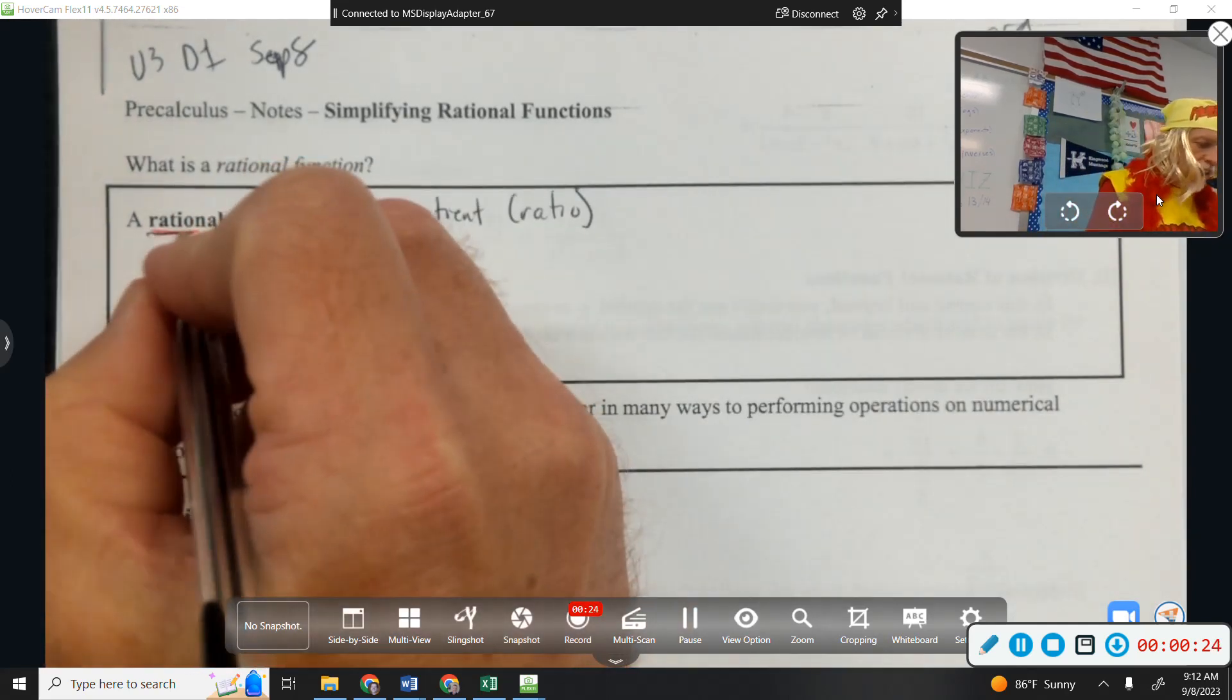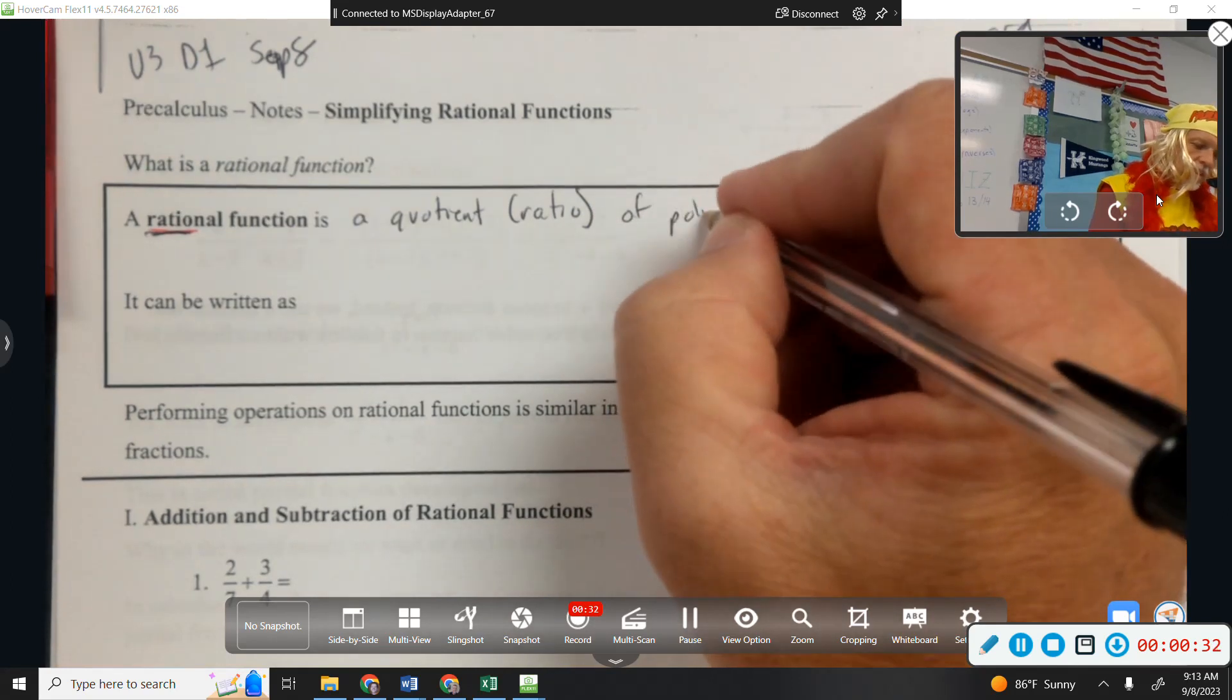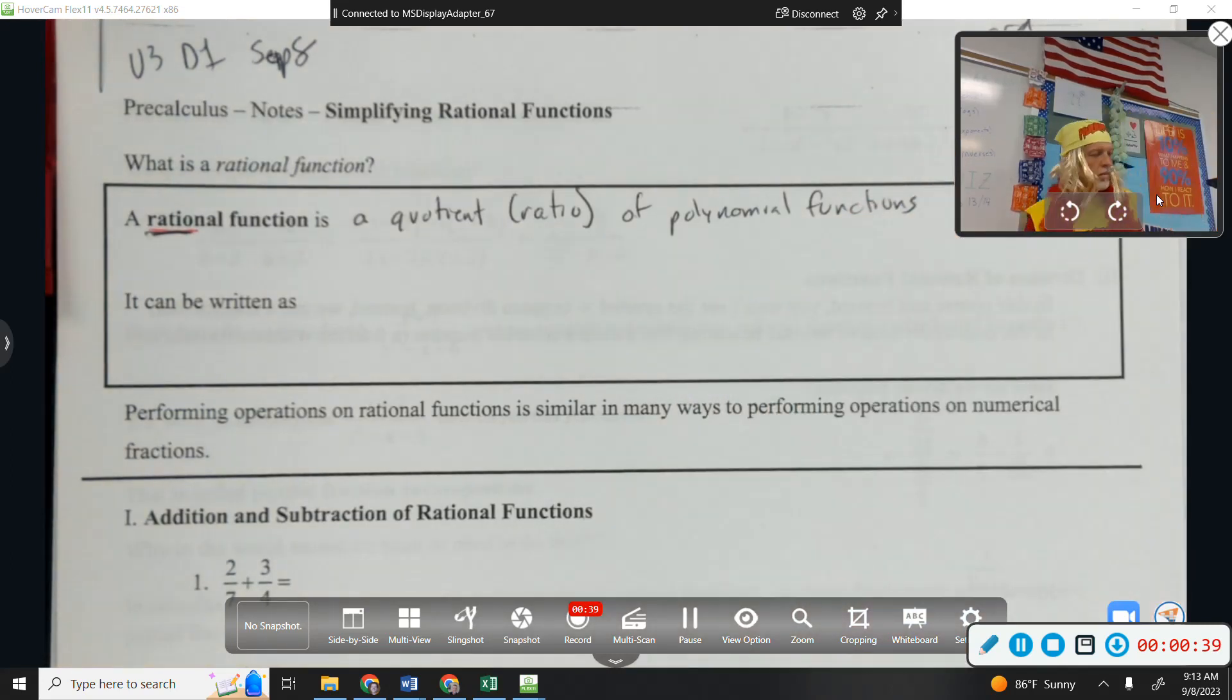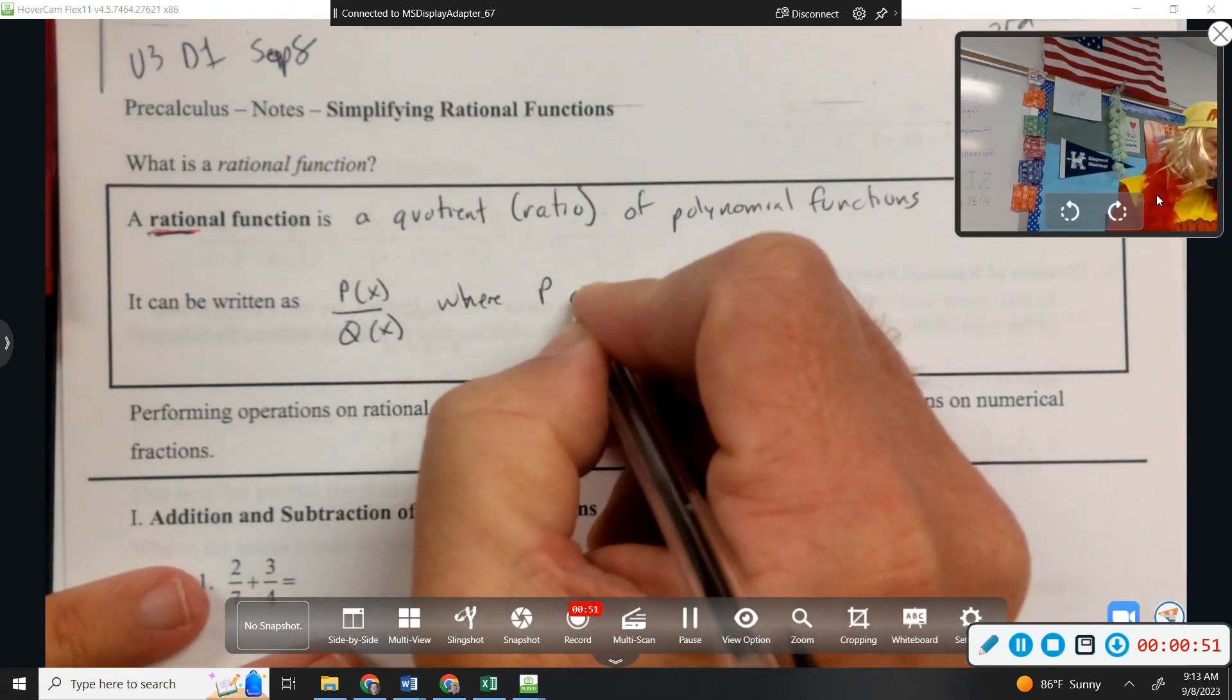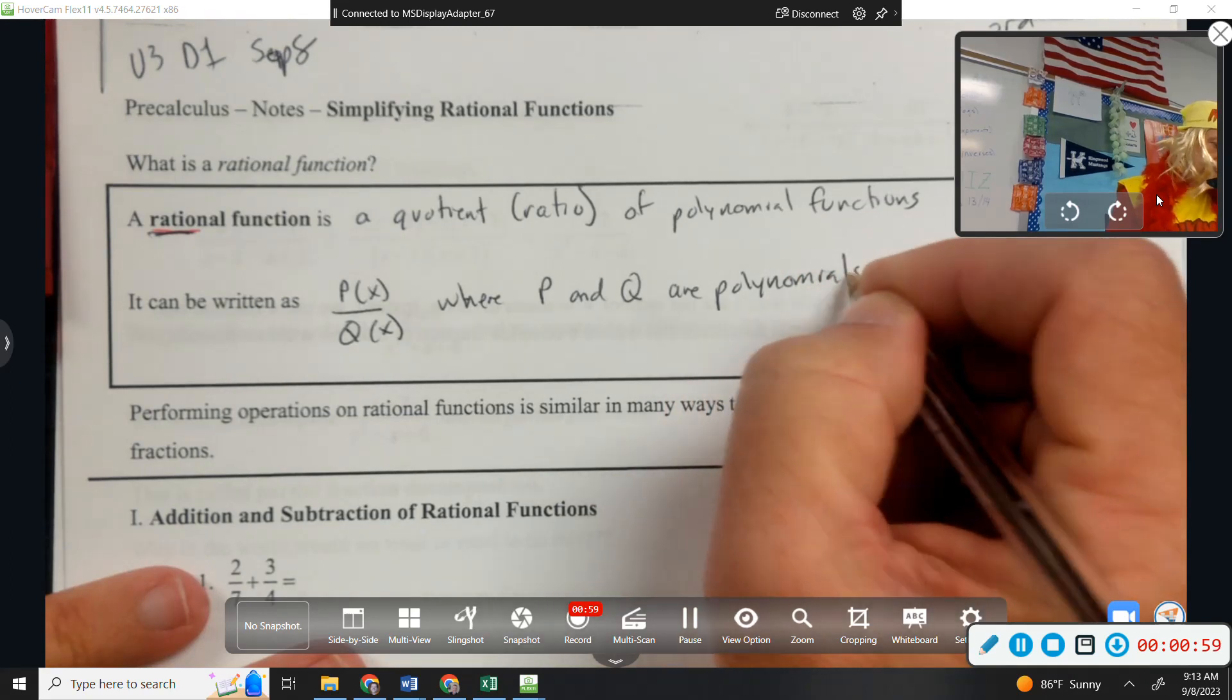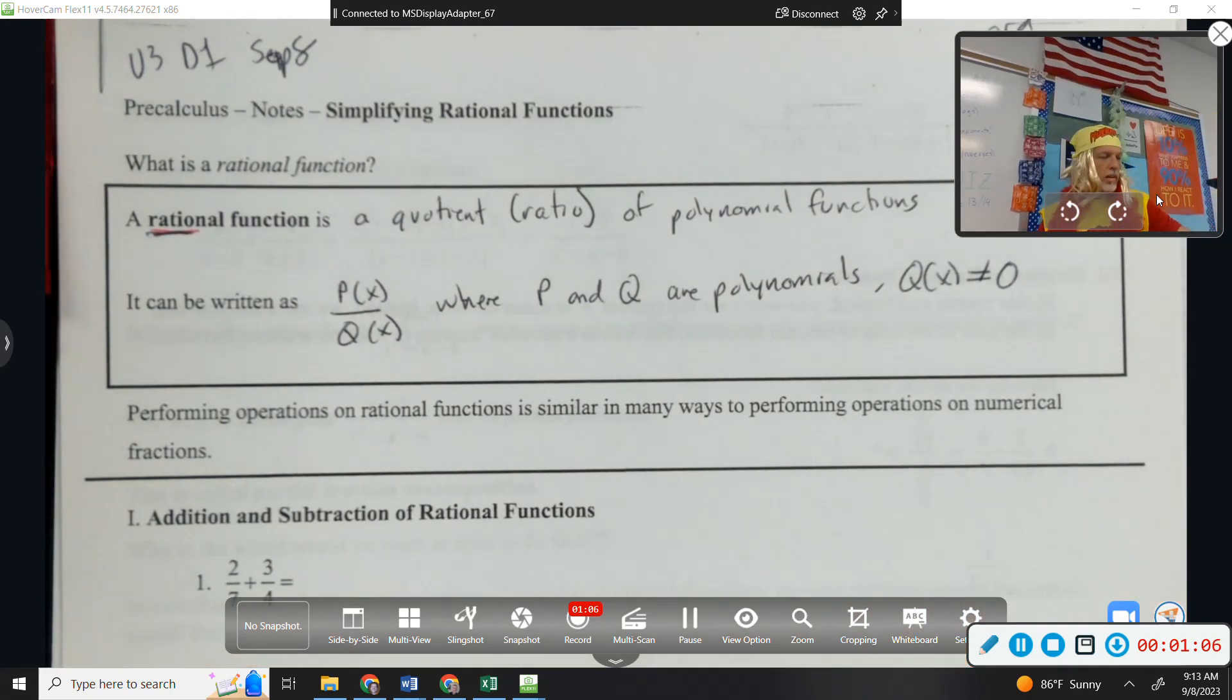Again, the first five letters of rational is ratio. So a rational function is a quotient, a ratio of polynomials, or of polynomial functions. It can be written as P of X over Q of X, where P and Q are polynomials. And we'll need to say that Q of X can't be zero. So a rational function is a ratio of functions where both the functions are polynomials.